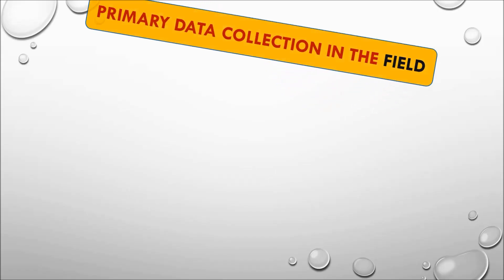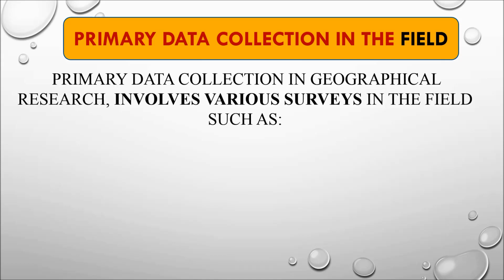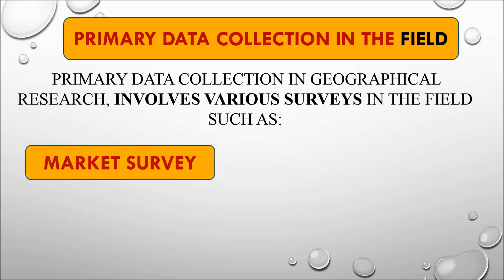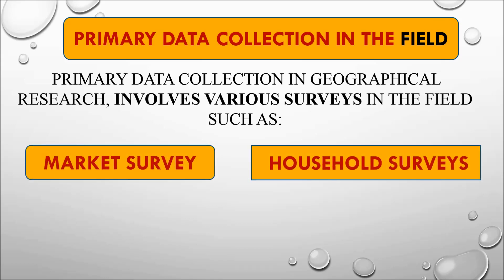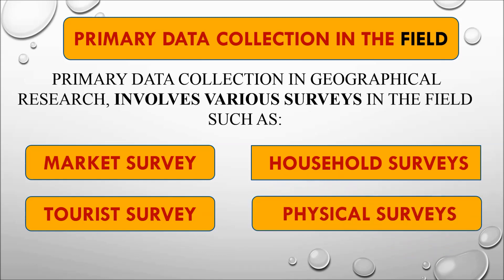The first important thing is to understand primary data collection in the field. Primary data, as we already learned in session 6, is the first-hand collection of data. During fieldwork we collect primary data, and primary data collection in geographical research involves various surveys — such as market surveys, household surveys, tourist surveys, physical surveys, and many other kinds.